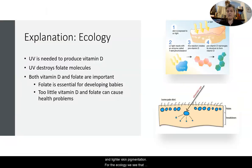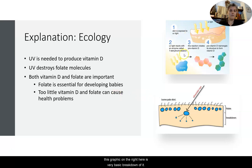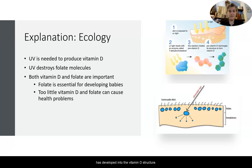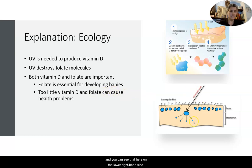For the ecology, UV is needed to produce vitamin D — vitamin D synthesis occurs when skin is exposed to UV light. You can see in the graphic on the right a basic breakdown: UV light reacts with an enzyme to create a pre-vitamin D, which then over a series of cycles develops into the vitamin D structure. However, in high UV radiation, folate molecules are destroyed — there's a store of folate in the surface of the skin, and when UV radiation comes in, the folate molecule is destroyed.